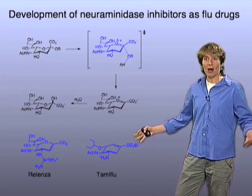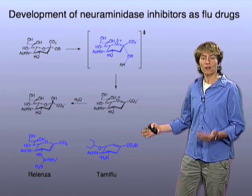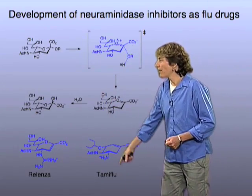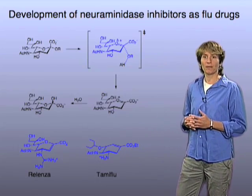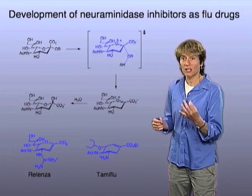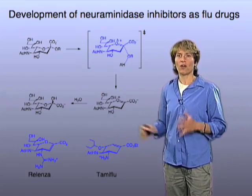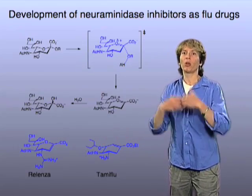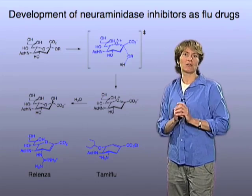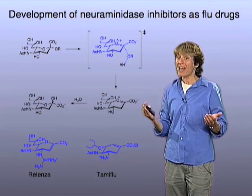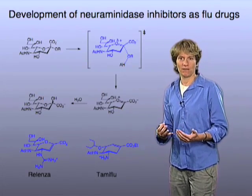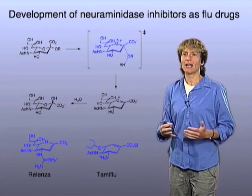These two molecules are actually now on the market as flu drugs. This compound goes by the trade name Relenza, and this compound goes by the name Tamiflu. If you feel the very early symptoms of the flu coming on, you can go to the doctor, get a prescription for one or the other of these, and try to prevent the full-blown onset of the flu. Or, if someone in your family has been diagnosed with the flu and you're worried that you might catch it, you might take one of these two drugs as a preventative measure, as a prophylactic against the flu.